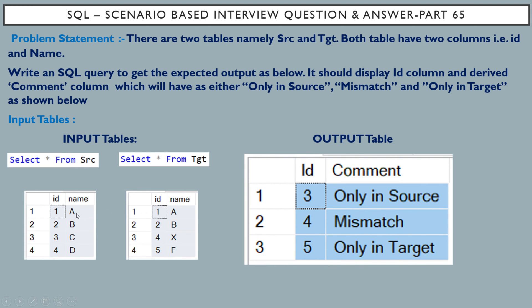If you see IDs 1 and 2, they are present in both the source and target tables with the same name values. For ID equal to 3, it is not present in the target table, so it appears in the output with the comment 'only in source'. For ID equal to 4, the source has value D but the target has value X, so it appears with the comment 'mismatch'.